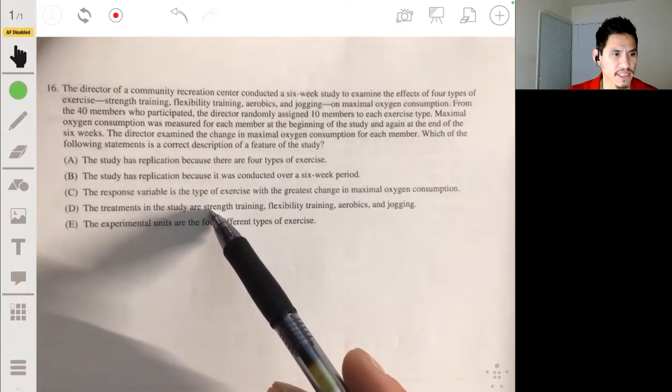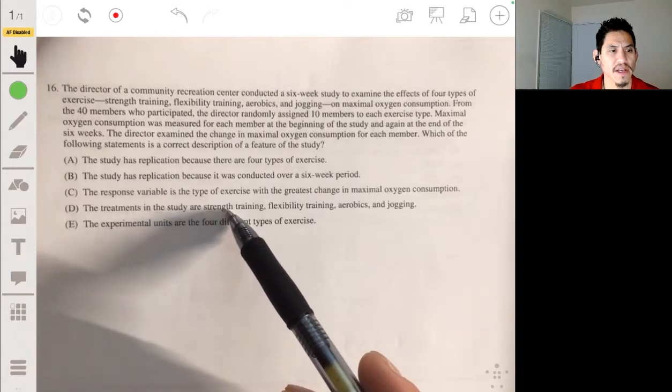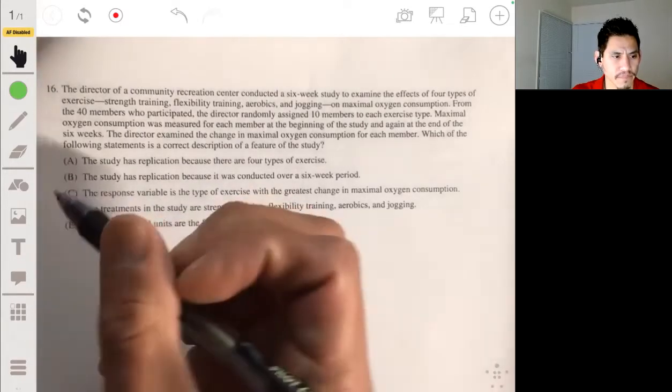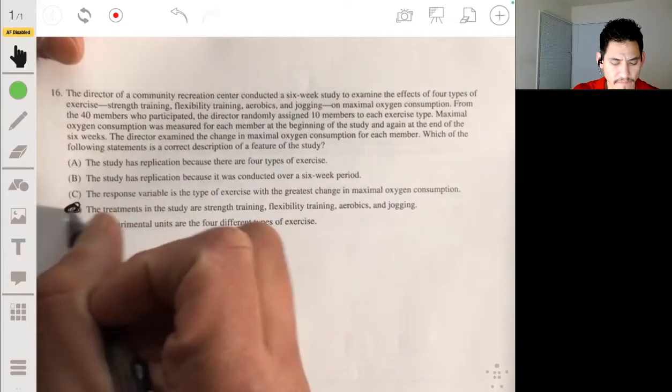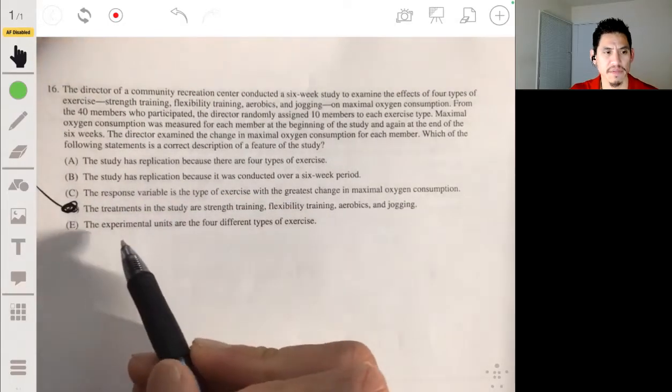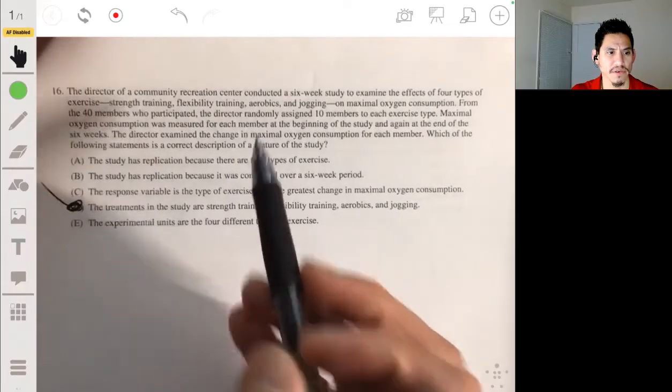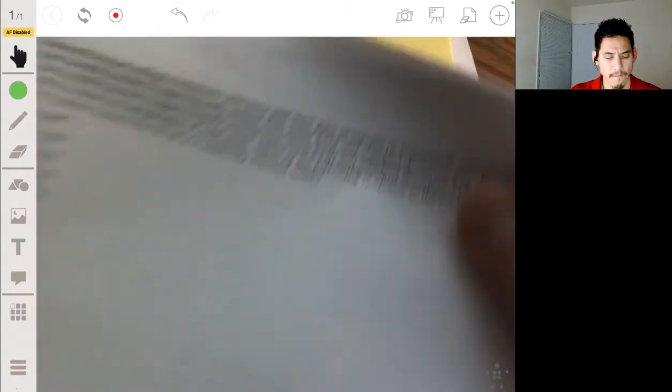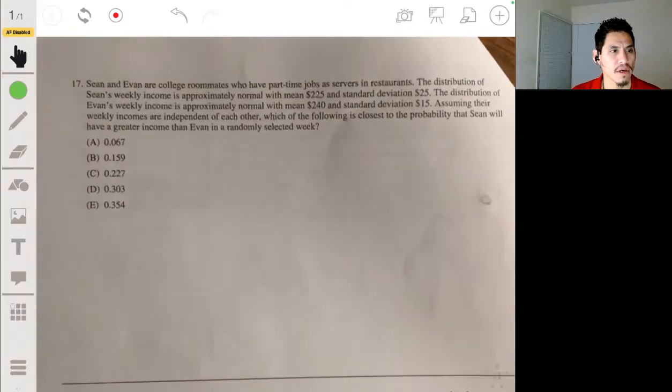So D would actually be the correct answer because it says treatments are the strength training, flexibility training, aerobics, and jogging. So it would be D and not E because the experimental units are the individual subjects.